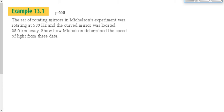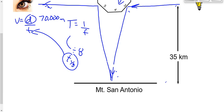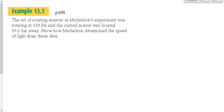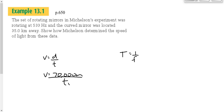The curved mirror was located 35 kilometers away. Michelson determined the speed of light from this data. We write down two equations — V = D/t and T = 1/F — and then start subbing in numbers. V is what we're trying to find. The distance would be 70,000 meters. Divide by the time for one eighth of a rotation — we don't know that yet, so we'll go to the next equation. We don't know big T, but we do know the frequency is 533 hertz. So let's get big T: one divided by 533 gives 0.001877... seconds.